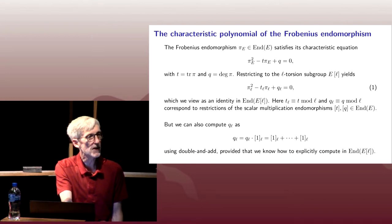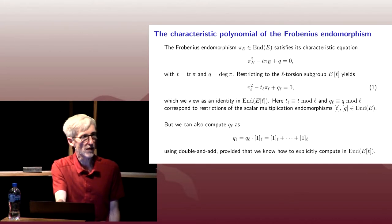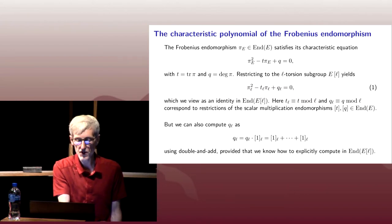So the t and the q there, you could think of them as integers, but really you should think of them as the image of integers in the endomorphism ring. Multiplication by t is an endomorphism. That's how we want to think of that t. And that q, we don't want to think about it as the cardinality of our finite field, we want to think of that as the multiplication by q endomorphism.